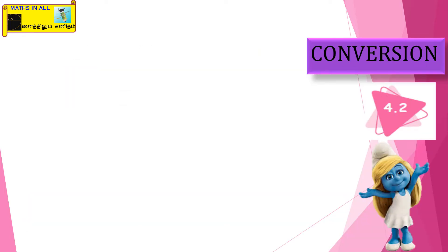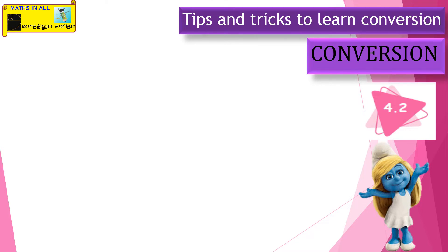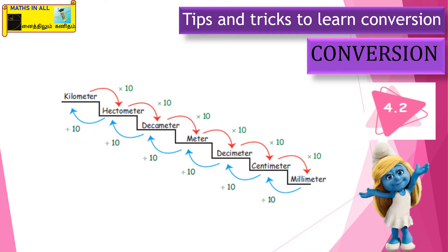So conversion, this is the very most important area, so listen carefully. Yes, this is the tips and tricks to learn conversion in an easy way. Look at this - this is in your book itself. What are they saying? From kilometer to hectometer, we have to multiply with 10. Then hectometer to decometer, 10. Decometer to meter, 10. Likewise we have to multiply for every unit with 10 only, clear?